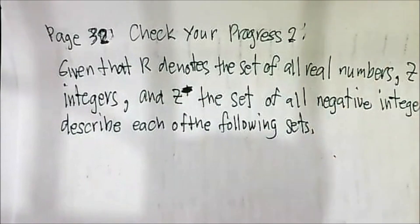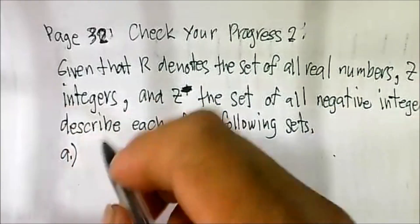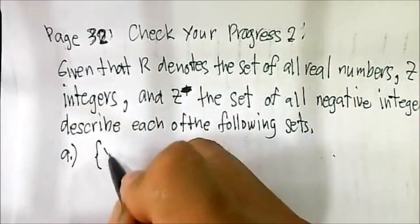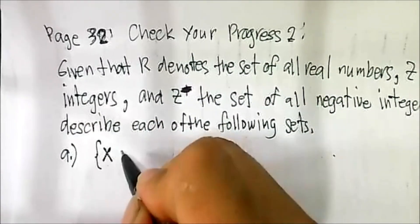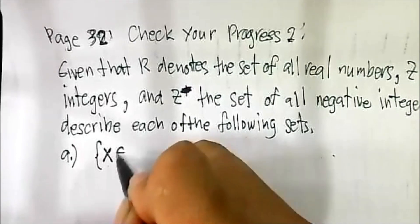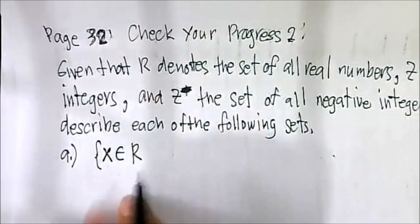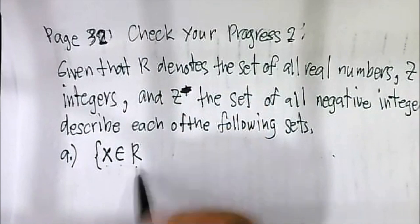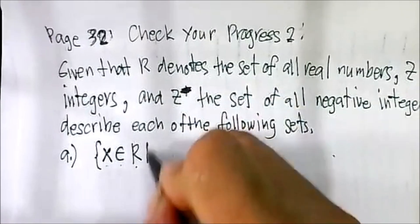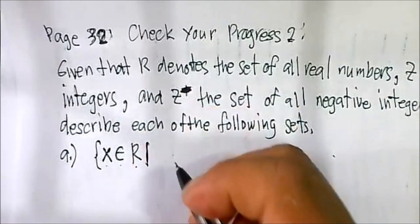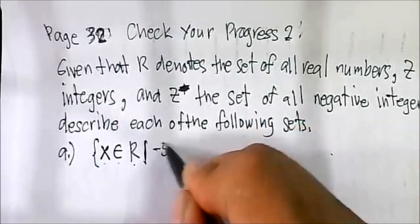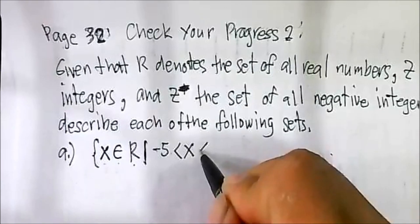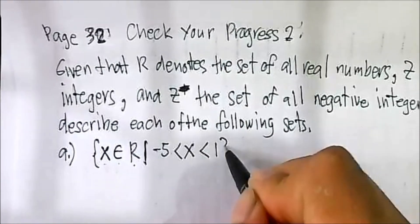Letter A: the set of all x elements of real number such that negative five is less than x and x is less than one.